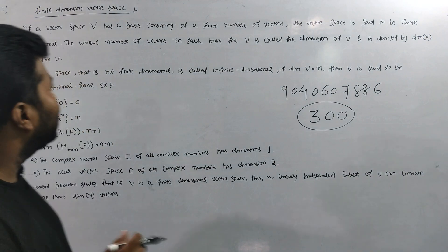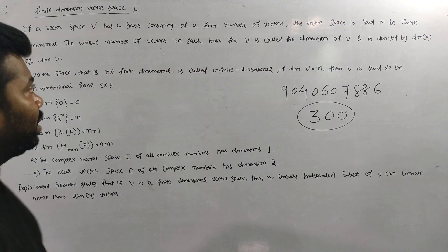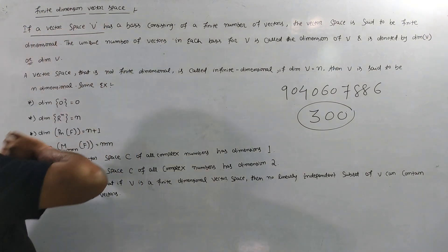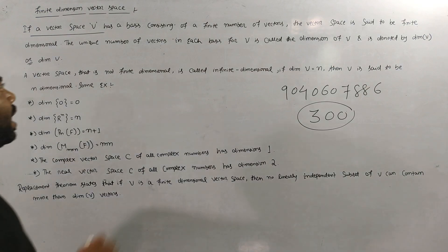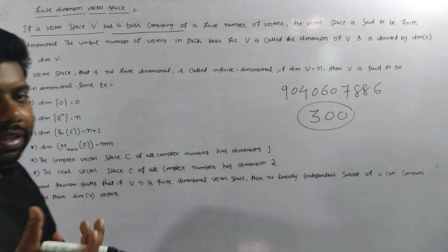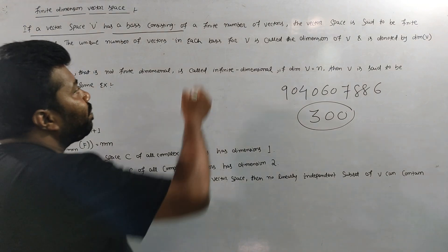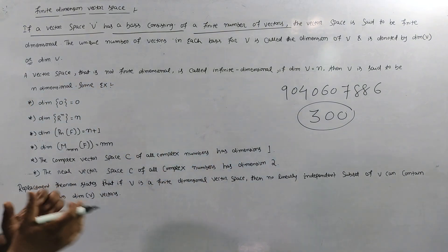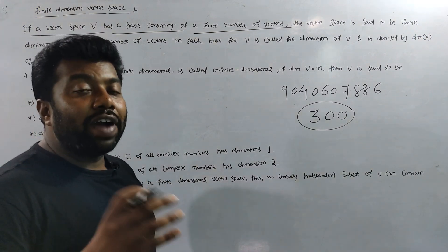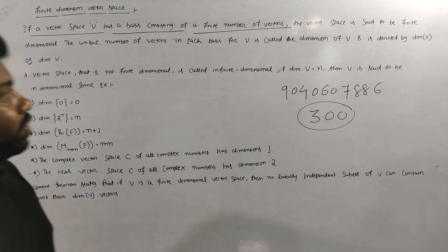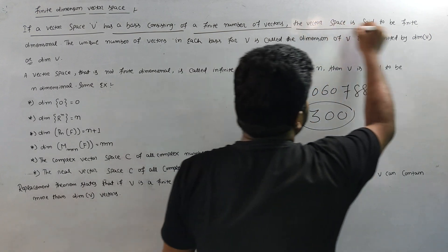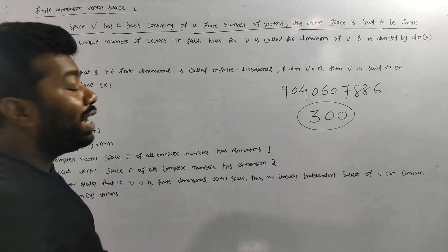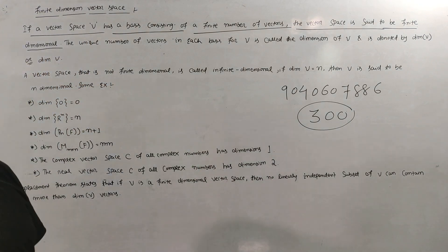The topic is about the finite dimensional vector space. If the vector space V has a basis, and it has a finite number of vectors, then the vector space is said to be a finite dimensional vector space.